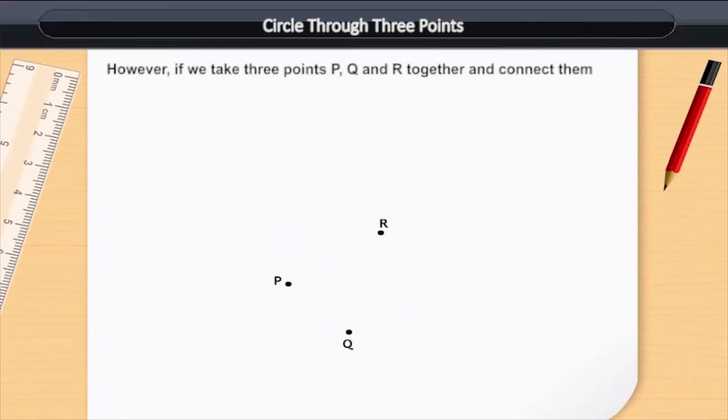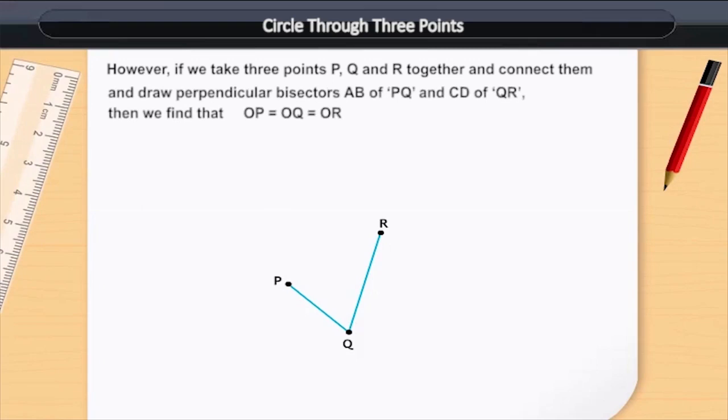However, if we take three points P, Q and R together and connect them and draw perpendicular bisectors AB of PQ and CD of QR,